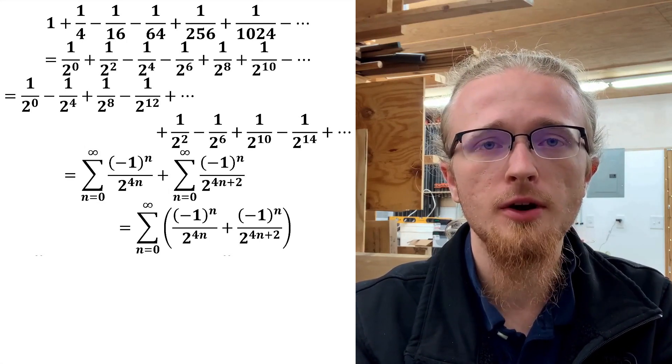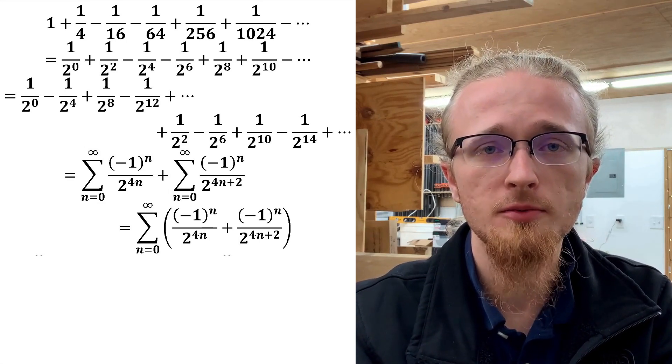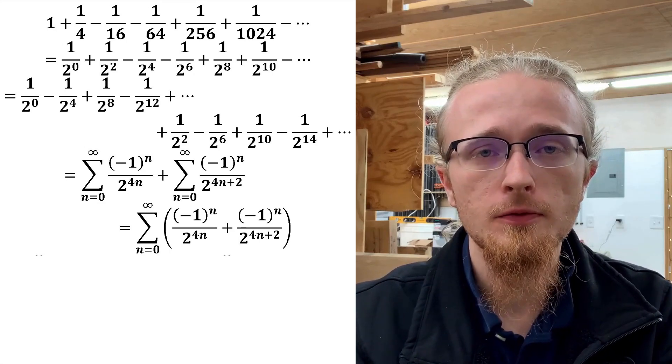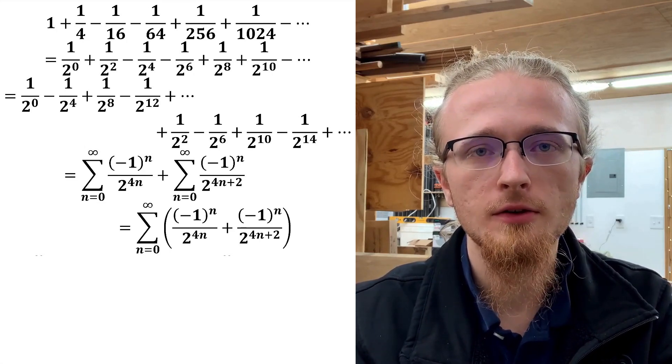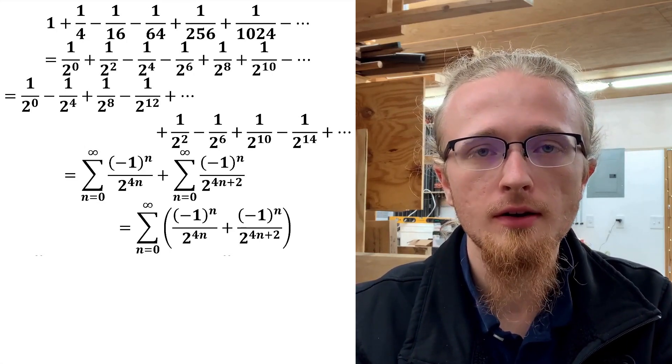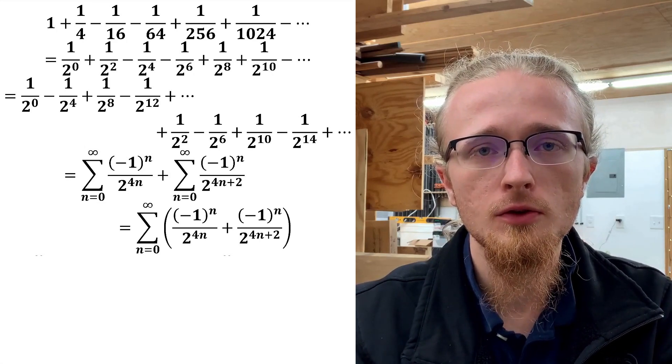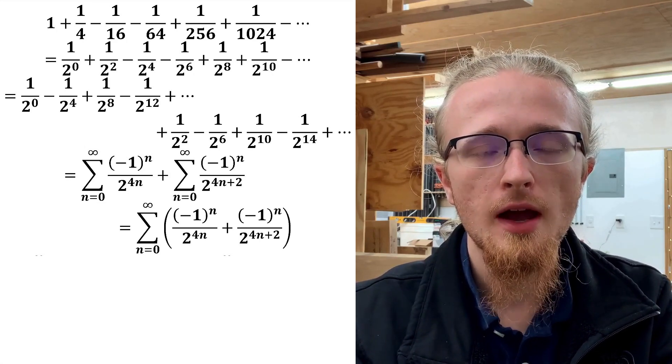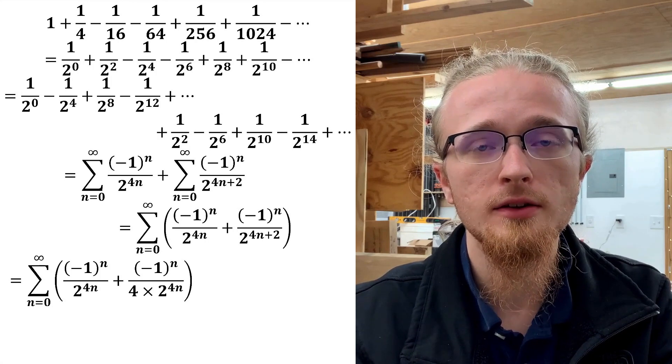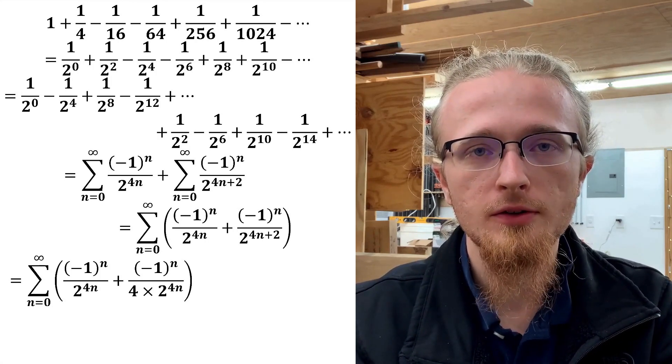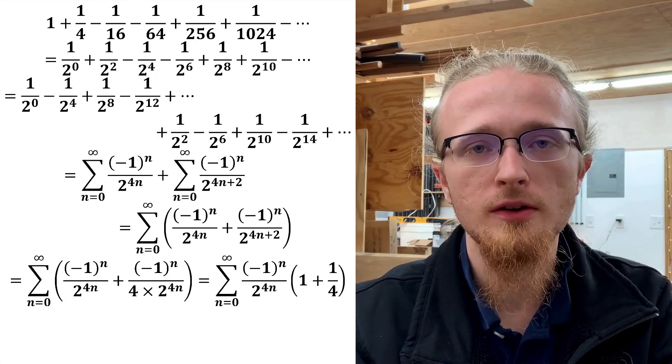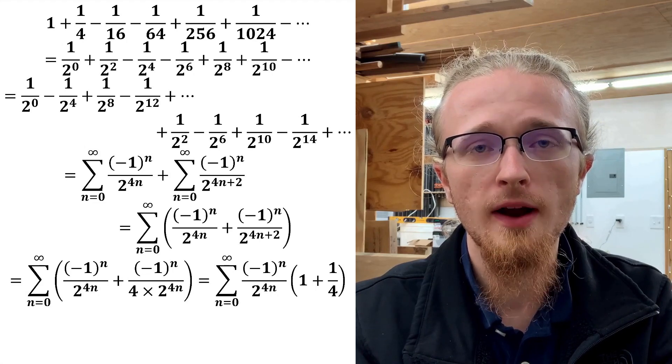It turns out that the expression that we have under the sum simplifies down quite nicely. The first step is to take a look at the second term. It turns out to be productive to rewrite 2 to the 4n plus 2 as 2 to the 4n times 4.